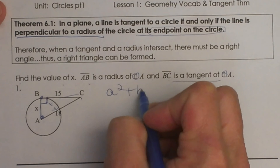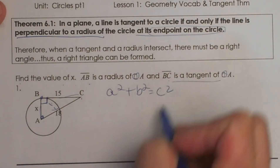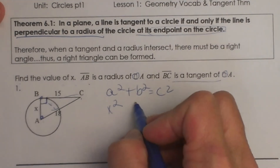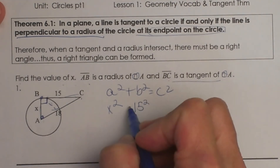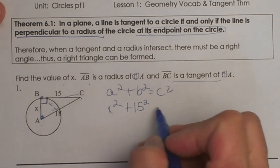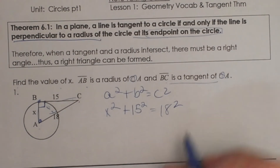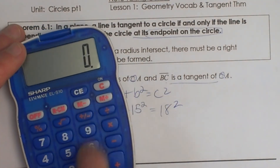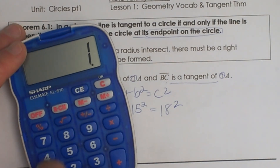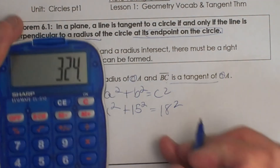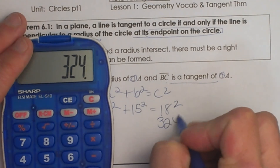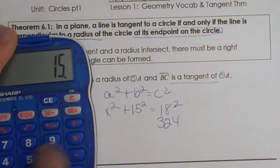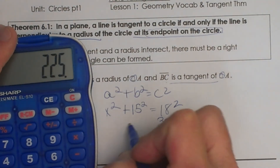I am going to use a squared plus b squared equals c squared. So my a is x, my b is 15, and my c is 18. Let's grab a calculator and solve it for x. 18 squared is 18 times 18, and that is 324. And then 15 times 15 is 225.